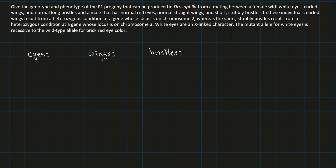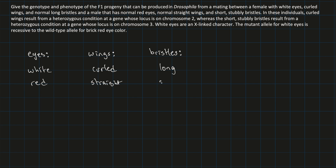The first set of phenotypes: the female has white eyes, curled wings, and normal long bristles. The male has normal red eyes — so the other phenotype for eyes is red — straight wings instead of curled, and short stubby bristles.